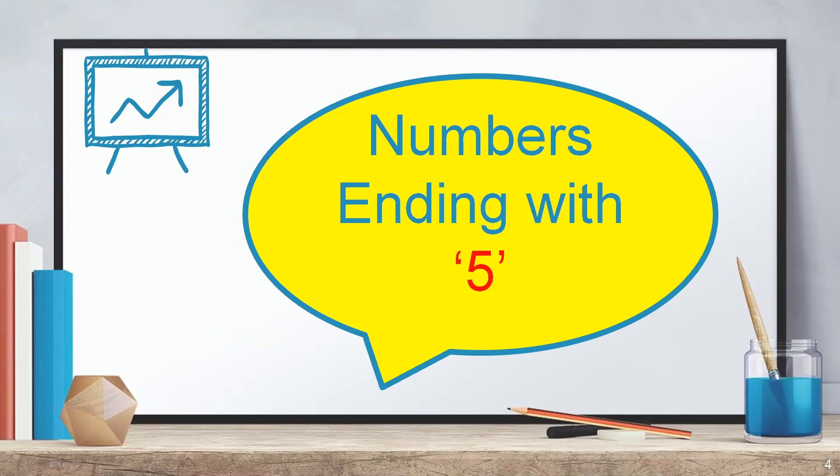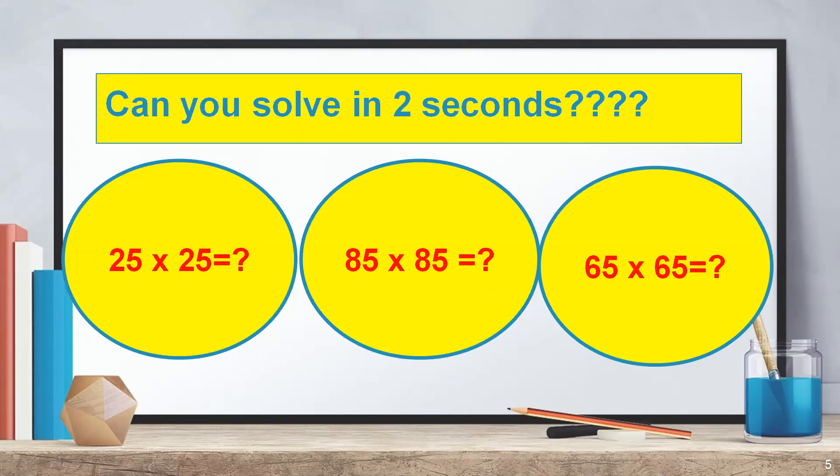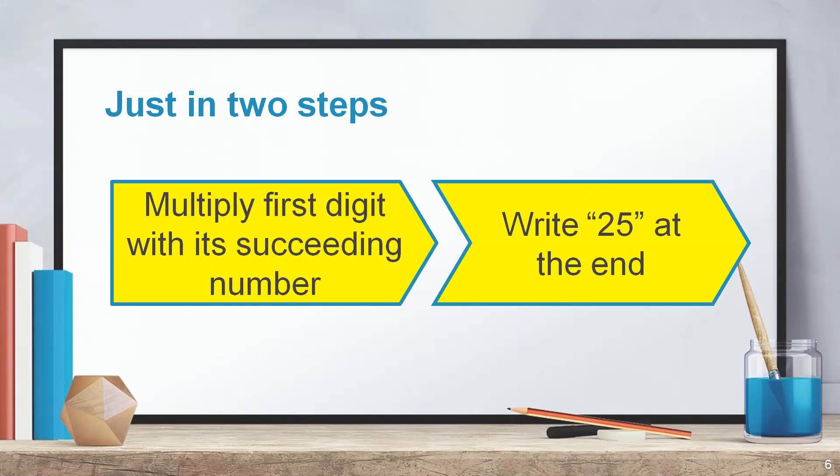Let's start with the first type. It is numbers ending with 5. This is the easiest. You will not take any time other than writing the answer. For this, you can solve this by using two easy steps. One is multiply the first digit with its succeeding number. For example, if you want to find out the square of 75, multiply 7 with its succeeding number, which is 8. 7 times 8 is 56 and write 25 at the end. No matter what is the first digit, every answer will end up with 25.